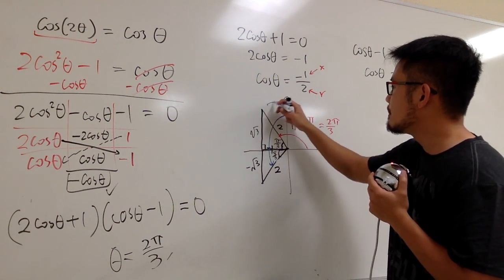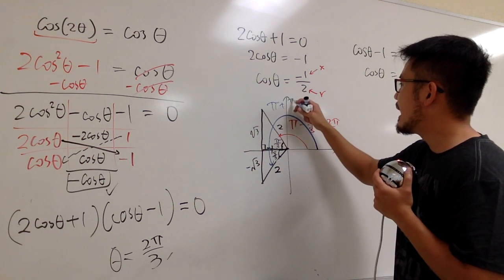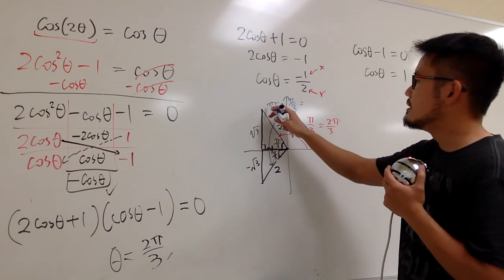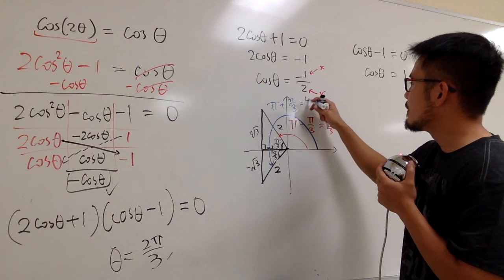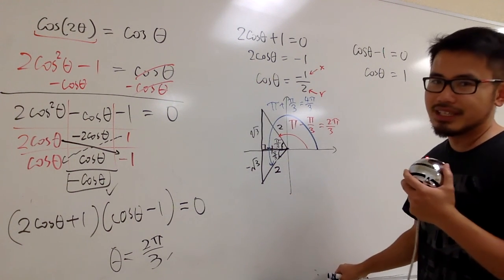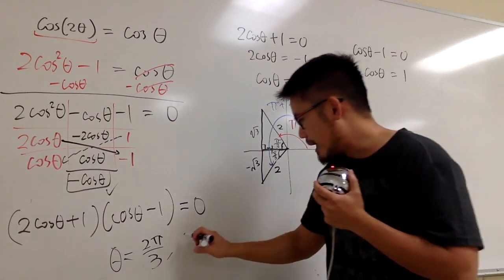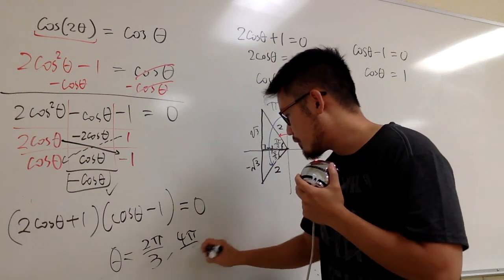So, the blue one is going to be π plus π over 3. This is like 3 over 3 plus 1 over 3. So, we have 4 over 3. And that's the π, of course. So, second answer, 4π over 3.